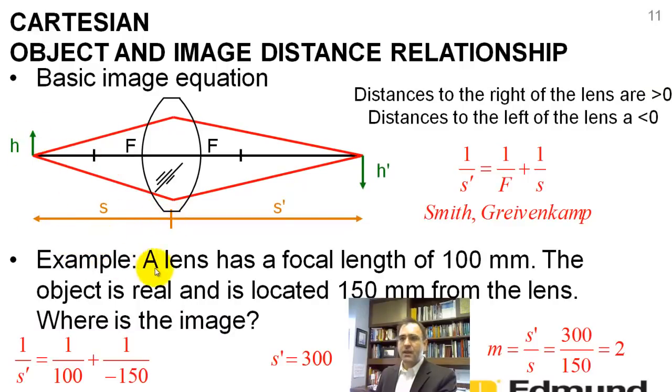So let's give an example. A lens has a focal length of 100 millimeters, and the object is real and is located 150 millimeters from the lens. Where is the image? Well, you plug and chug, you've got to know that this 150 is really negative. You plug and chug into your equation, you get S prime to be 300. And oh, by the way, the magnification is roughly two. I'm waiving sign conventions here.